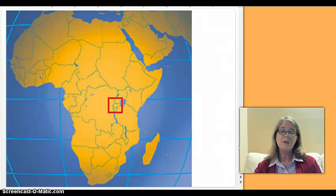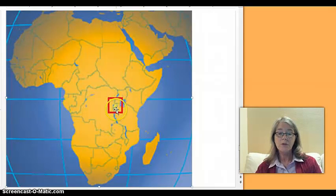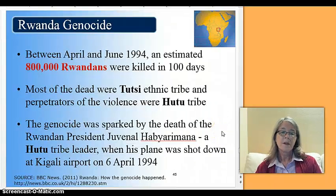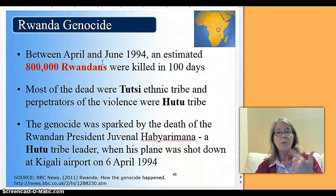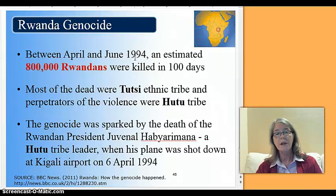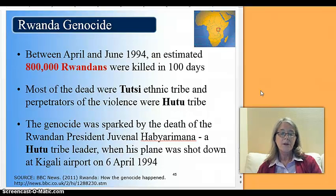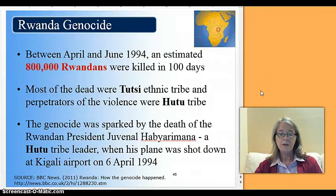Rwanda is just south of Uganda and shares a border with Tanzania. It's a very small country. Between April and June — three months in 1994 — an estimated 800,000 Rwandans were killed in 100 days. This is a genocide. Most of the dead were Tutsi ethnic tribe, and the perpetrators were Hutu. The genocide was sparked by the death of the Rwandan president — a Hutu tribe leader — when his plane was shot down in Kigali, the capital of Rwanda, in 1994.